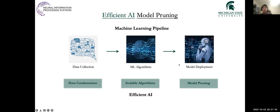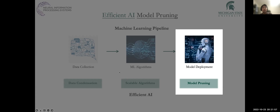The last decade has witnessed great success in machine learning and artificial intelligence. In the meantime, models have become larger and larger with more and more data for increasingly complicated algorithms. Therefore, efficient artificial intelligence has emerged as an important research goal and direction. Principled approaches have been proposed for different parts of the machine learning pipeline. For the model itself, model pruning is one of the most studied branches and has received increasing attention, and it is also the focus of this work.